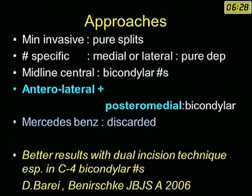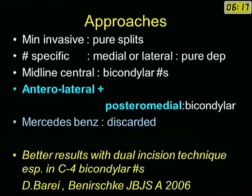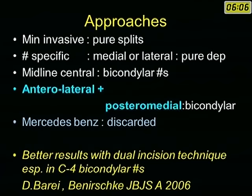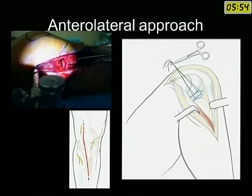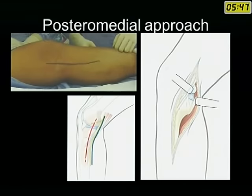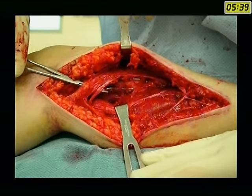There are many approaches described: minimally invasive for pure splits, fracture-specific for unicondylar fractures. The most popular approach today is a dual approach — anterolateral and posteromedial — for bicondylar fractures. The Mercedes-Benz incision looks good on cars but not on patients. Evidence from JBJSA 2006 by David Burry shows the dual incision technique gives much better results for bicondylar fractures. The anterolateral submeniscal approach and posteromedial approach involve reflecting the pes anserinus and preserving the medial head of the gastrocnemius.